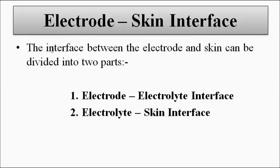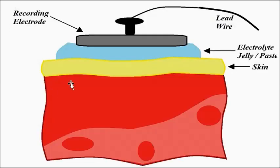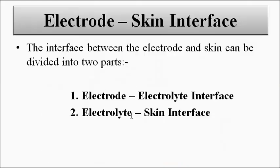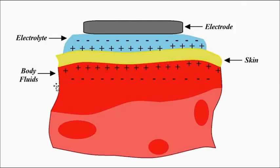The interface between the electrode and the skin can be divided into two parts for analysis: first, the interface between the electrode and the electrolyte where these two meet; and then the interface between the electrolyte and the skin. Both of these portions contribute to signal conduction and play their own role, as I have already discussed in separate previous videos.